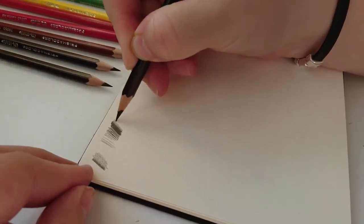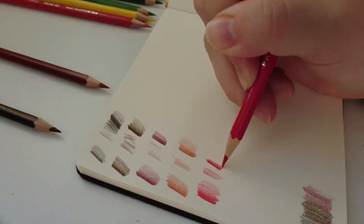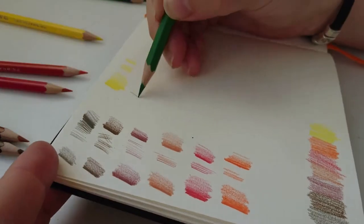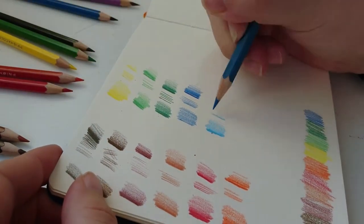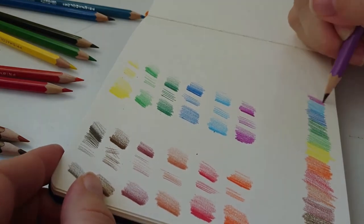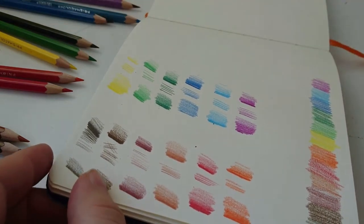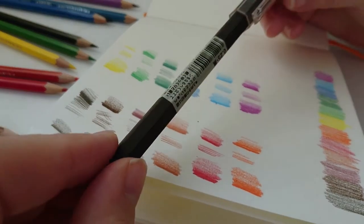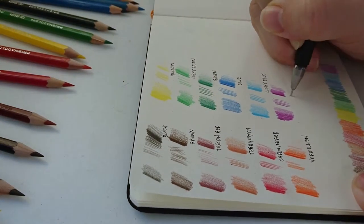I started swatching the pencils out and noticed immediately that they have a really lovely texture. They're really soft and the texture of the page works really nicely with them. There's a lot of colours to choose from in the red section. I'm not really sure about the greens and blues, they're a bit bright. I'm going to use my little Muji pen to write down the names.